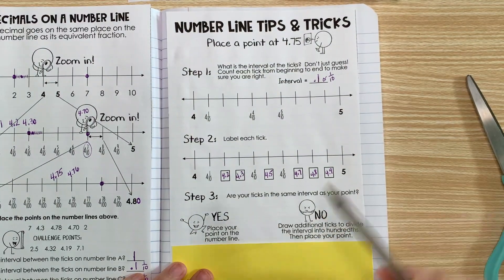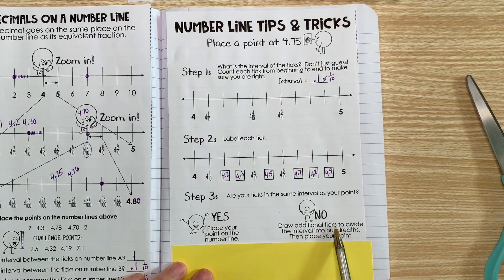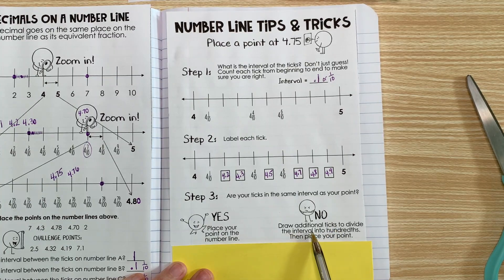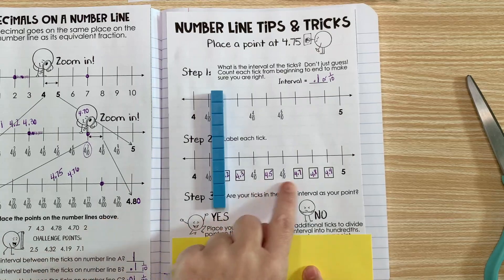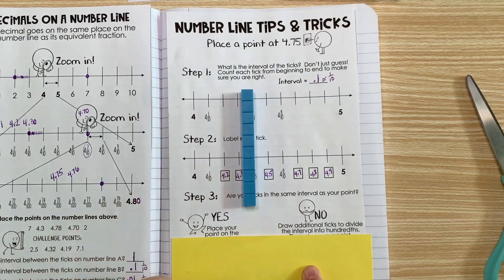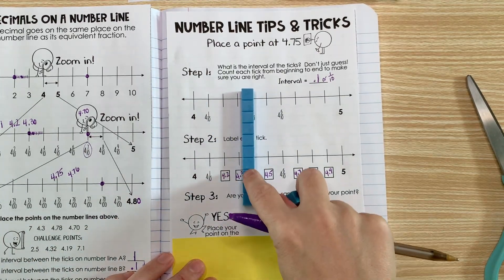Since it's not, we have to draw additional ticks to divide the interval into hundredths and then place your point. Remember, if you have a tenth and you want to divide it into ten equal parts, each part would be a hundredth.